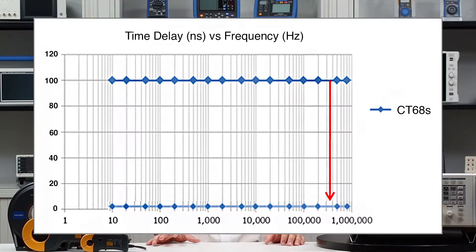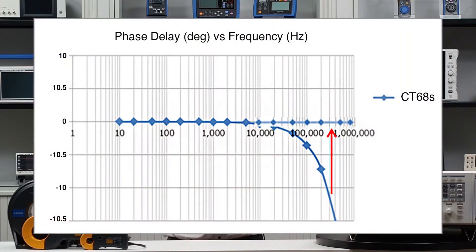Here is how this delay looks for a Hioki CT68 series current sensor. The time delay is shown in nanoseconds against the frequency. Of course, 100 nanoseconds of delay at 100 Hz doesn't have the same impact as 100 nanoseconds at 1 megahertz. This becomes clear when translating the time delay into phase delay values described in degrees. To make things as straightforward as in this case, you need a current sensor where the time delay is the same regardless of the frequency. With Hioki current sensors like the CT68 series, this is the case. So coming back to the deskew function, you only need one value to compensate the phase shift of the sensor — this is one of the things that makes Hioki sensors special, but it's not standard for current sensors currently on the market.